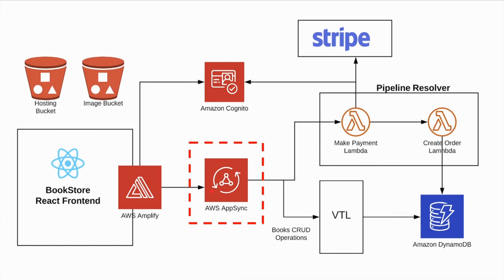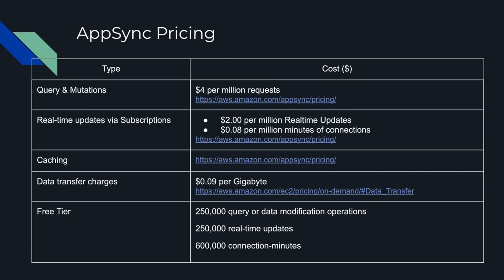Let's focus on AppSync and how much it's going to cost us. This is the pricing table for AppSync — the figures are taken directly from the AppSync pricing page, which you can visit. In our application, we will mainly be charged for queries, mutations, and data transfer charges, since we are not using real-time subscriptions or caching. By the way, if you are under the free tier, you won't be charged unless you exceed 250,000 queries or mutations.